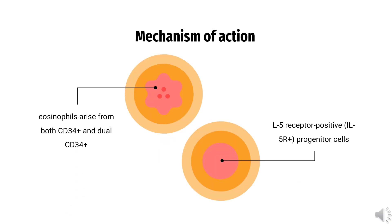How does Reslizumab work? Reslizumab is an interleukin-5 (IL-5) antagonist, IgG4 kappa, that binds to IL-5 with a dissociation constant of 81 pM. IL-5 is a pro-inflammatory cytokine responsible for the terminal maturation of eosinophils and reduces chemotaxis, endothelial adhesion, activation, and survival of eosinophils.